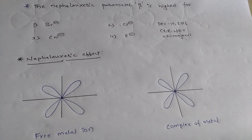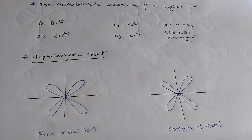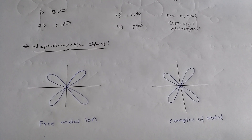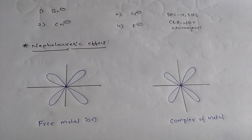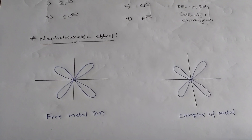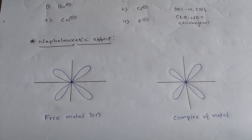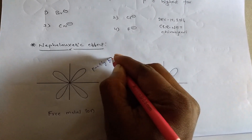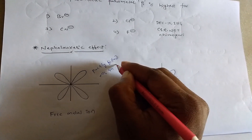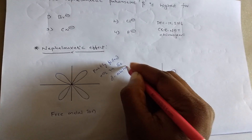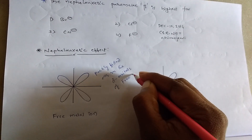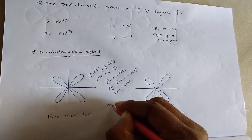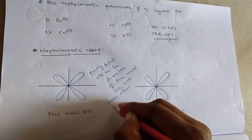To solve this problem, first we have to know what is the nephelaxitic effect. To explain the nephelaxitic effect, we should observe the metal of d-block elements in its free state — it has inter-electronic repulsions in the d-orbitals. The partly filled electrons in the d-orbitals of the free metal ion have inter-electronic repulsions.